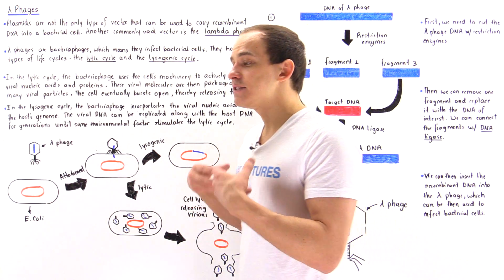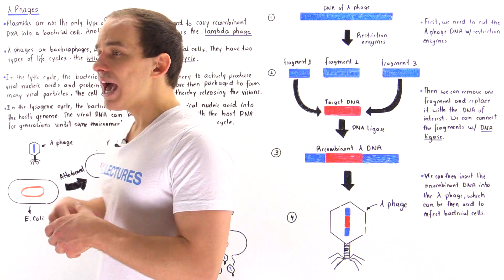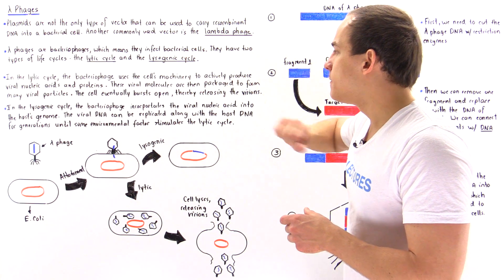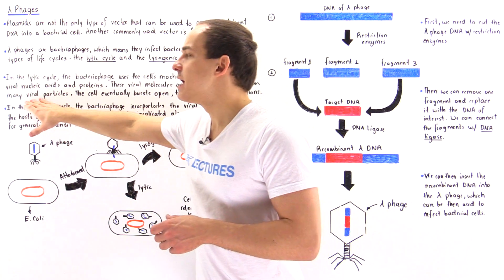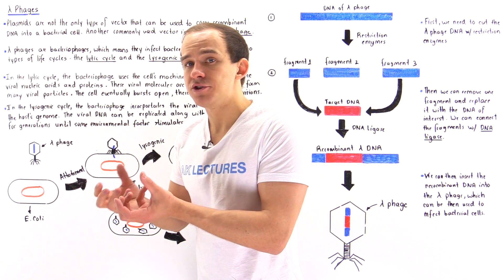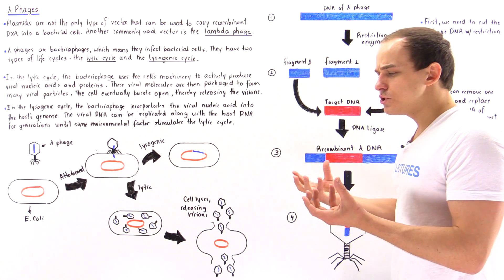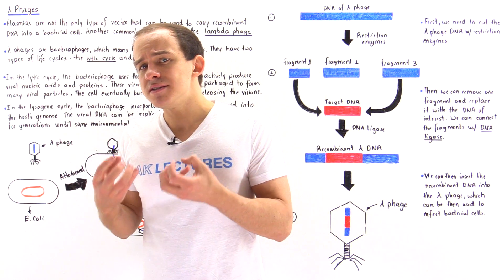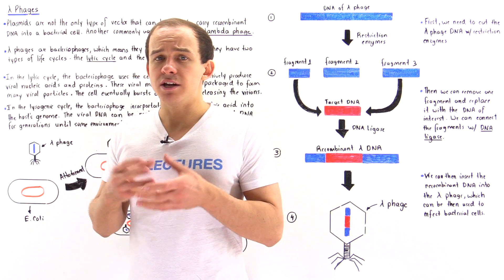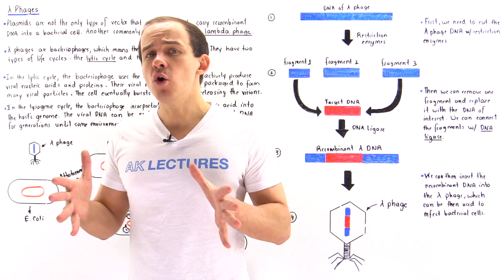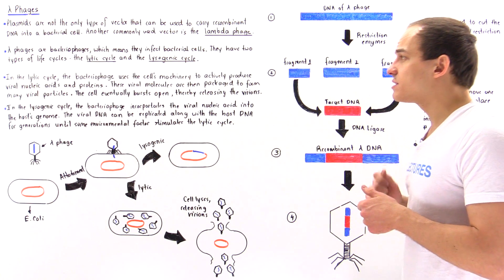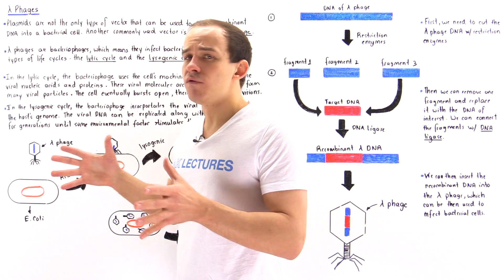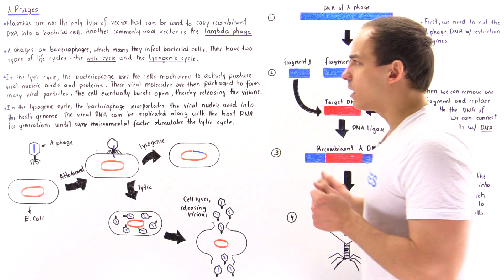In the lytic cycle, the phage produces many viral protein molecules and viral DNA molecules, and assembles and packages these into viral particles. It can produce as many as 100 viral particles inside the cell. When the cell can't hold all those viral agents any longer, it essentially bursts open, releasing all those newly synthesized virions to the outside environment, where they can go on to infect other bacterial cells.